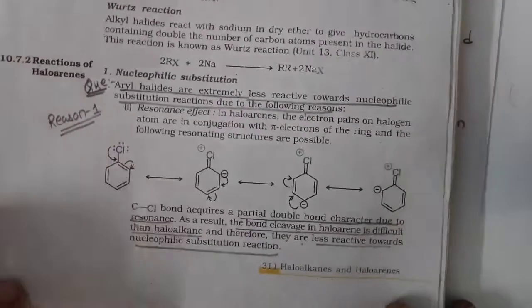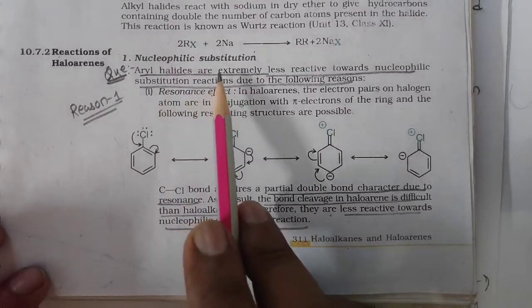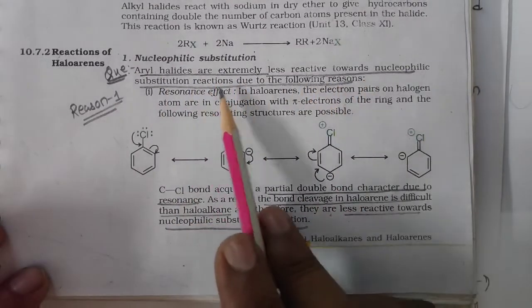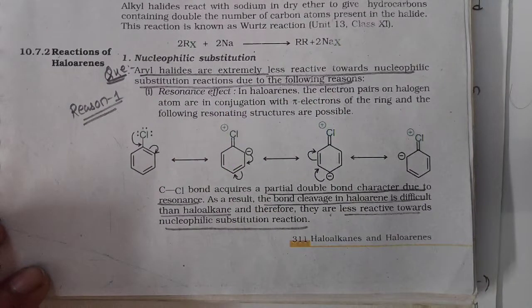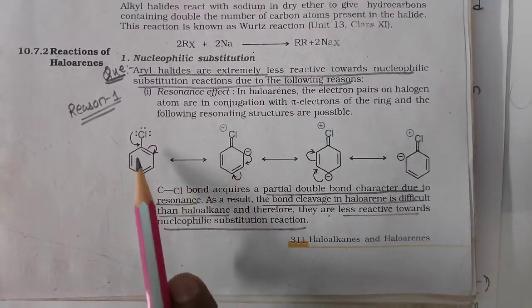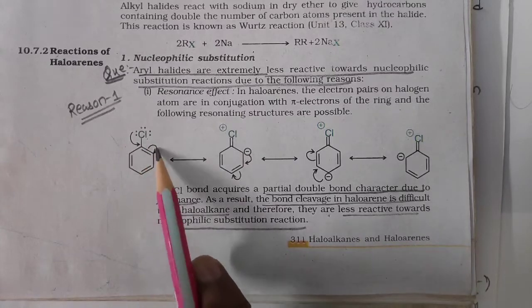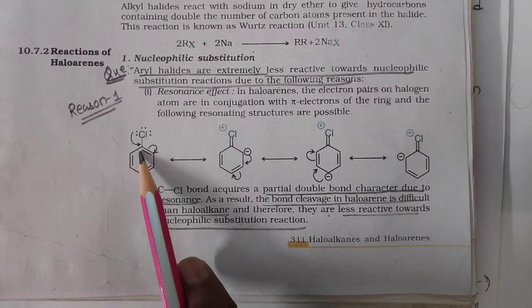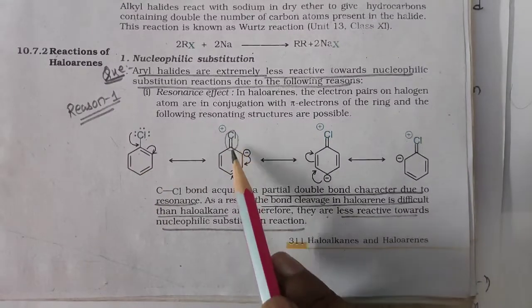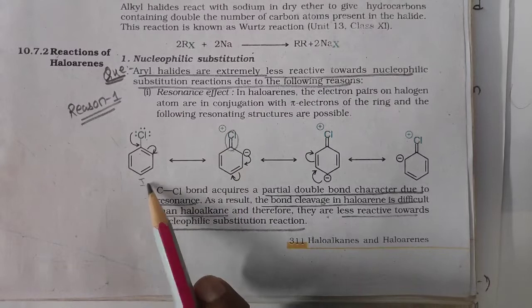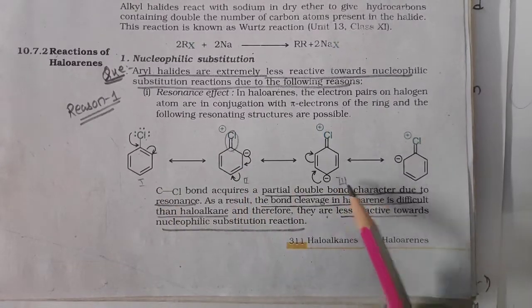Aryl halides are extremely less reactive towards nucleophilic substitution reaction due to resonance effect. Chlorine donates an electron pair and activates the benzene ring. As a result, there is formation of a double bond and these are the resonance structures 1, 2, 3, and 4, which we have already studied in 11th standard.